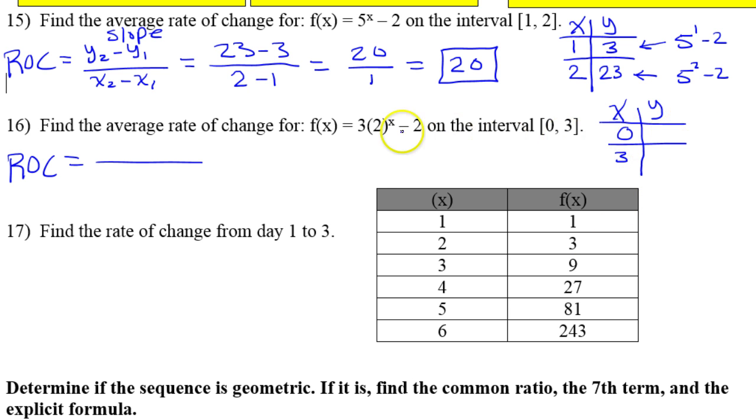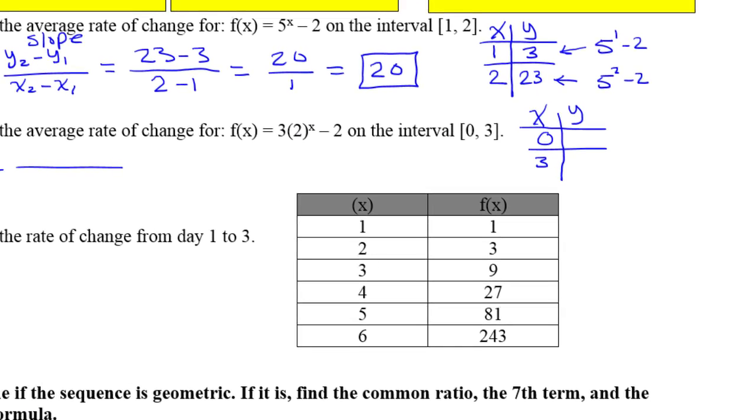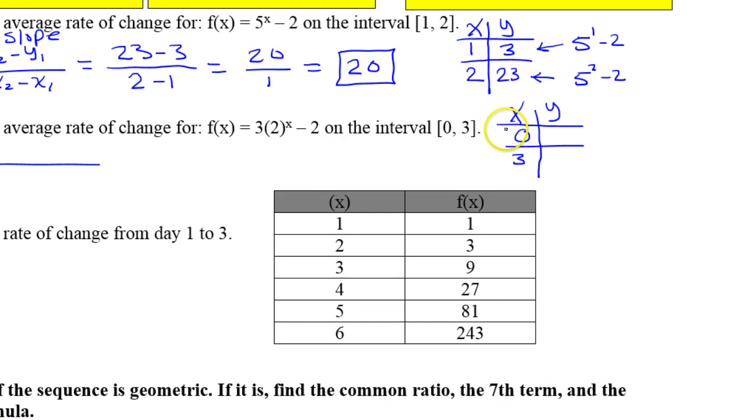Now for the y's, let me slide over a bit. So I'm using this formula. I'm plugging in x and I'm finding y. So for this y value right here, I'm going to have 3 times 2 to the 0 power minus 2. Now anything to the 0 power is 1. So this is really just 3 minus 2, which is 1.